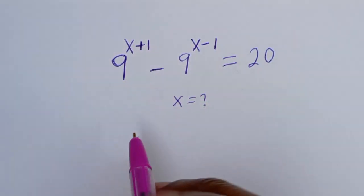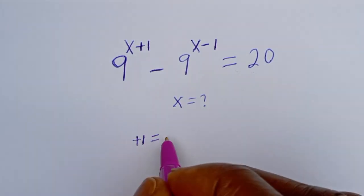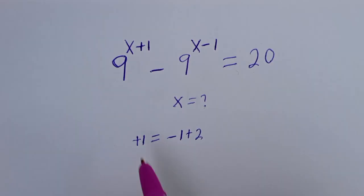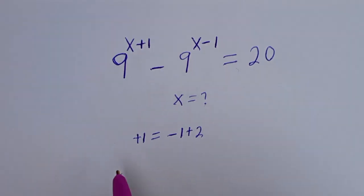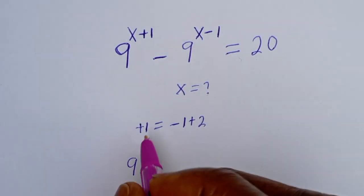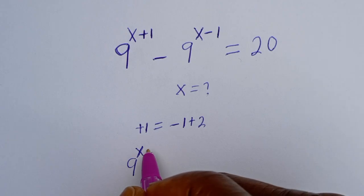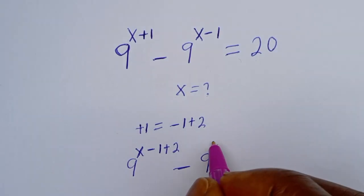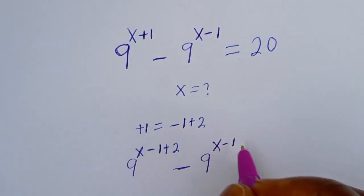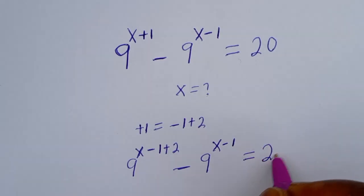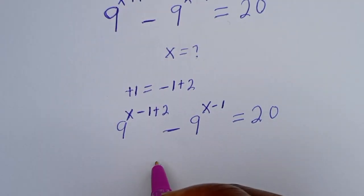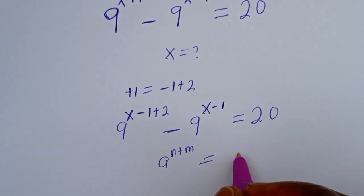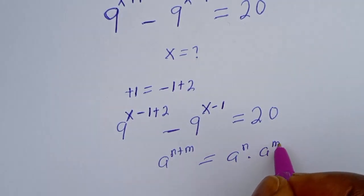Now let's see — this plus 1 can be written as minus 1 plus 2, and minus 1 plus 2 will give you plus 1. Then we can substitute this. Take note that if you have a to the power of n plus m, this is equal to a to the power of n multiplied by a to the power of m.